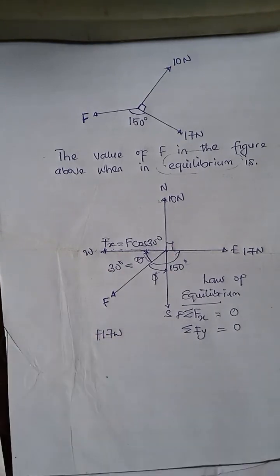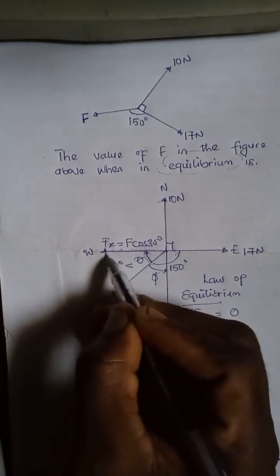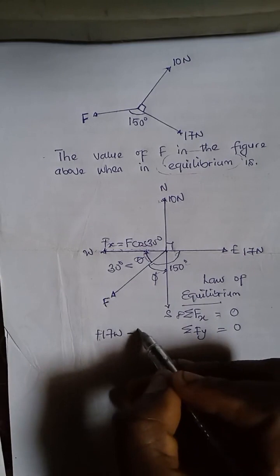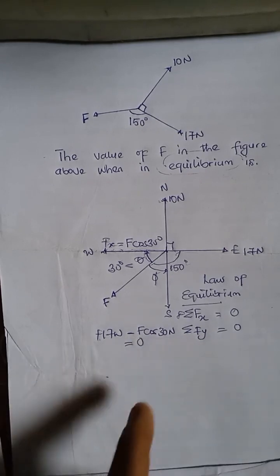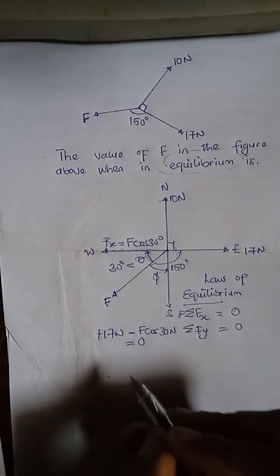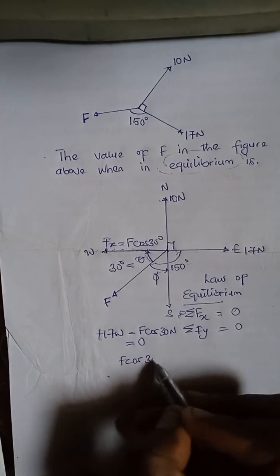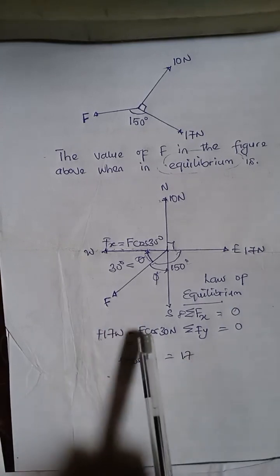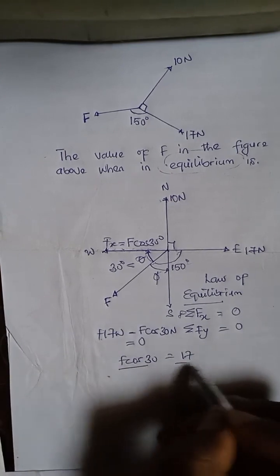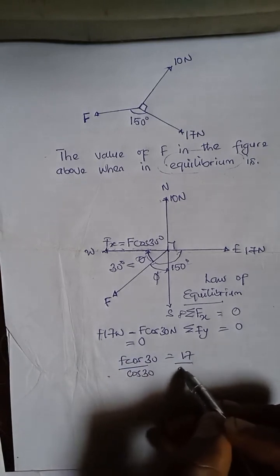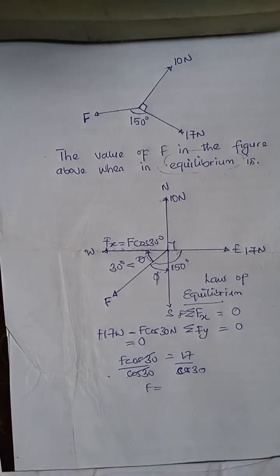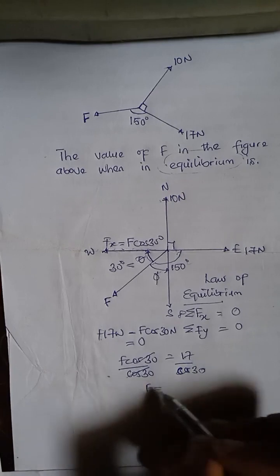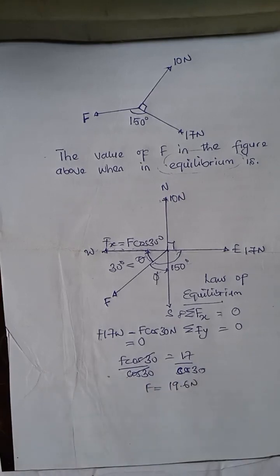So I will say 17 newton. Now, on the second note, it's going to be negative because it's on the negative x axis. So I'm saying 17 newton minus F cos 30 newton sums up to zero. So when I add the two of them, it gives me zero. So if I solve this now, I'm going to get F cos 30 is equal to 17. Because when I move F cos 30 to the other side, the sign will change. So I can now divide both sides by cos 30. This cancels this. And my F is going to be equal to 17 divided by cos 30. 17 divided by cos 30 is giving me 19.6 newton. And that is the value of F.